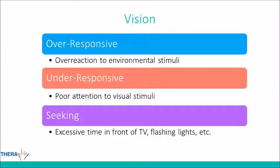Some other things to note about vision: kids can have poor visual discrimination — not linking visual information with other senses like touch, hearing, and movement. They can also have poor visual motor skills — trouble using vision to guide movements — leading to difficulty forming letters and shapes and doing tabletop tasks.